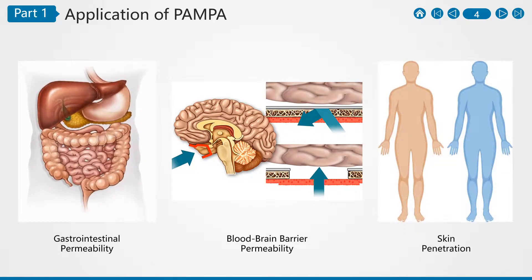To date, PAMPA models have been developed to exhibit a high degree of correlation with permeation across a variety of barriers, including CACO2 cell culture, the gastrointestinal tract, blood-brain barrier, and skin.